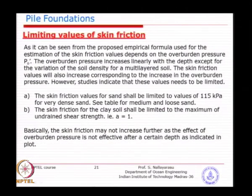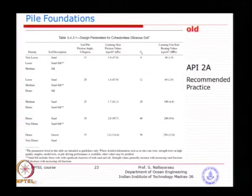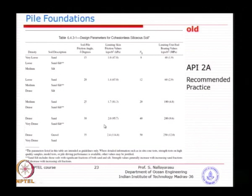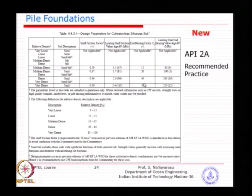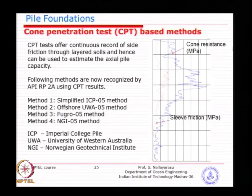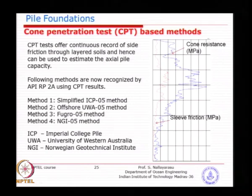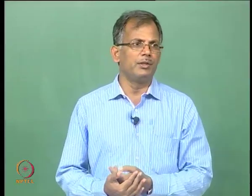In summary: for end bearing, clay uses 9Cu with no limiting value; sand uses Nq × P-naught limited to 12 MPa. For skin friction, both clay and sand have limiting values that must be applied. The old API table is no longer in use and will not be used for examination. The next method useful for estimating capacity is CPT — the cone penetration test, which provides continuous resistance data as a cone is driven into the soil.